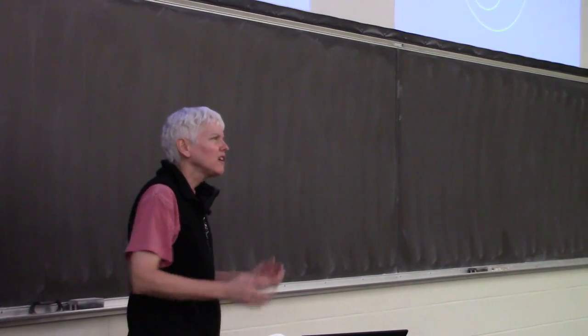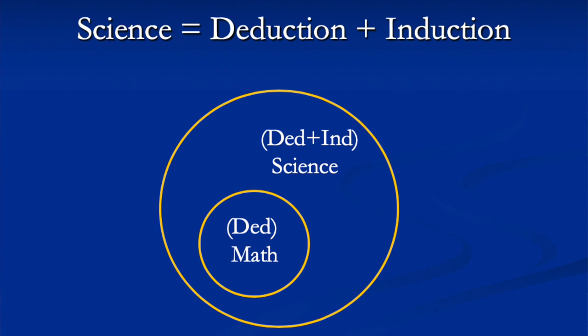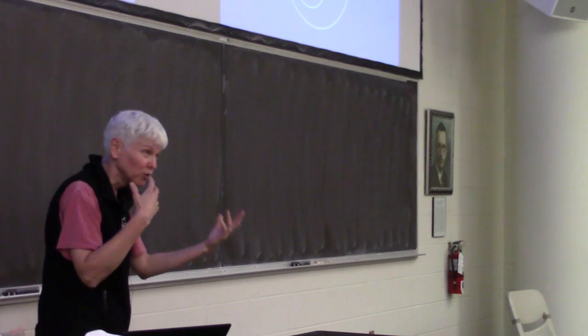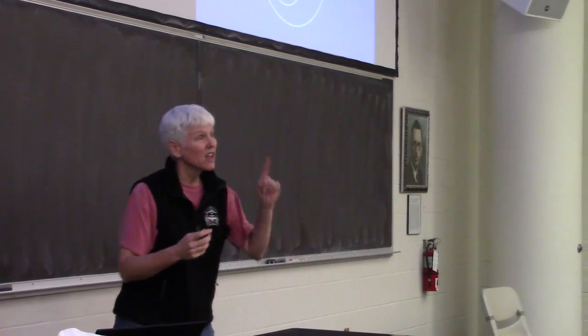Think of a Venn diagram where the circles show methods of obtaining knowledge, not knowledge itself. The smaller circle is the deductive method — mathematics. The larger circle containing it is the scientific method, which uses both deduction and induction.